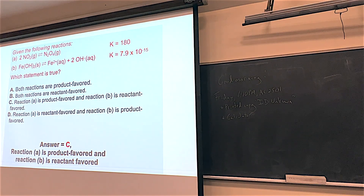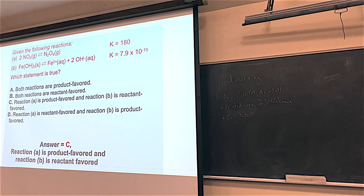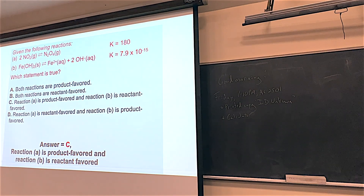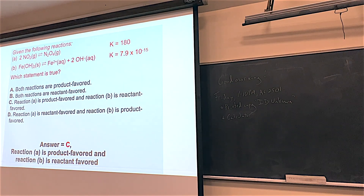Everyone asks: can K equal 1? In theory yes — that would mean equal amounts of products and reactants. I've never actually seen it in practice. K values get close to 1 from either side, but I've never encountered K exactly equal to 1.